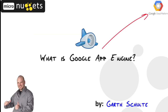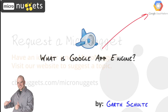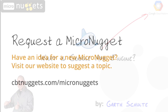In this CBT Micro-nugget, we saw what the Google App Engine is all about — it's Google's platform as a service offering in their Google Cloud Platform for building reliable, scalable, and robust applications where the infrastructure is all handled by Google. I hope this has been informative for you, and I'd like to thank you for viewing.